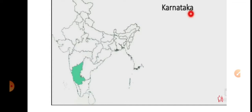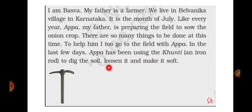Basva lived there and he was a farmer. As I explained, there are two types of crops: Kharif crops and Rabi crops. It was July month, so this was the time of Kharif crops. He wanted to sow seeds for the Kharif crop. He was growing an onion crop, and before sowing the seeds he was preparing the field.